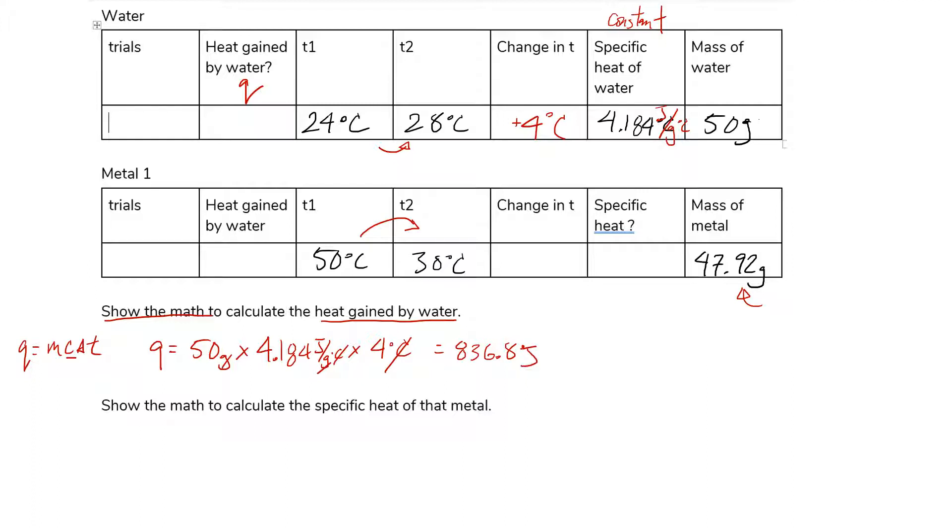Alright, so I'm going to write that here. 836.8 joules. So what is gained by the water is lost by the metal. Heat. I should have written this better. This is the heat lost by the metal, right?